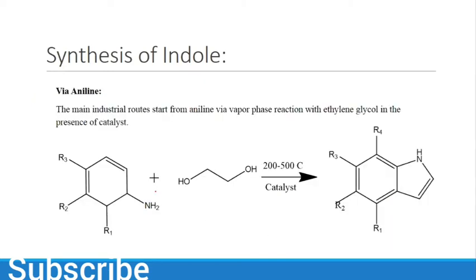The second method is the main industrial route, starting from aniline vapor phase reaction with ethylene glycol in the presence of catalyst. If we have aniline, we can prepare indole. If the starting material contains alkyl groups, we get indole with alkyl groups. If we don't have alkyl groups, we get indole without them.